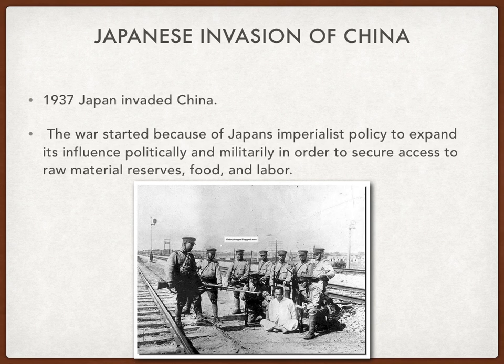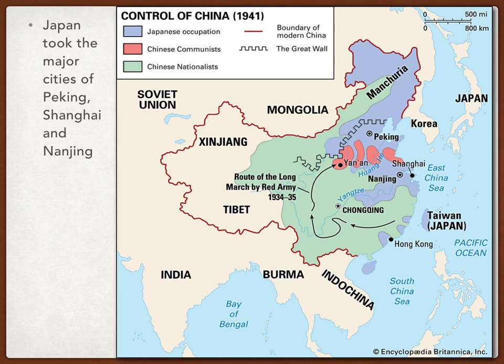Japan wanted to expand its influence politically and militarily. They wanted to secure access to raw materials such as food, labour, oil, and resources that Japan didn't have on its own islands. In 1937 war broke out between Japan and China again over the Double Seven Incident, also known as the Marco Polo Bridge Incident, and Japan invaded the rest of China. Quite quickly Japan took the major cities — Peking, now known as Beijing, Shanghai, and Nanking, as you can see from the map, with Japan occupying all the areas shown in blue.